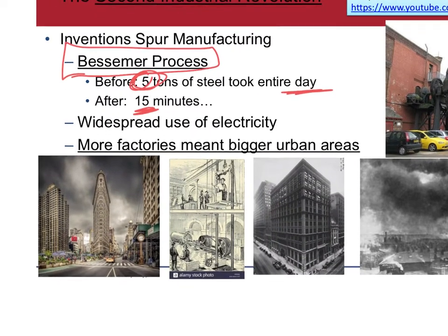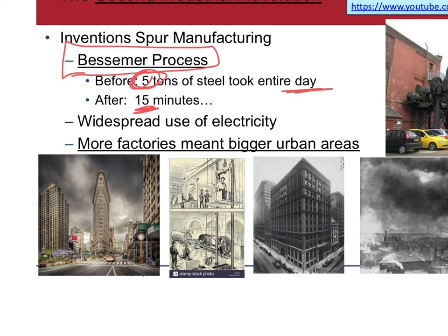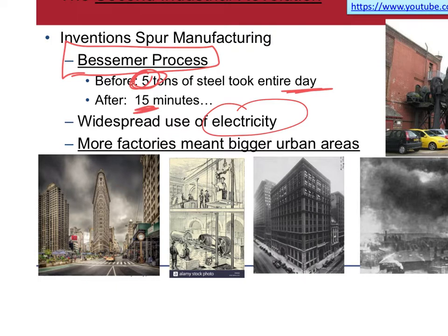Carnegie puts everybody else out of business with his new means of production. Also important is the widespread use of electricity. It wasn't widespread until roughly the 1880s — and even then, places like rural Tennessee didn't get electricity until the 1930s. But now we start seeing it in more major cities, being pushed outward.